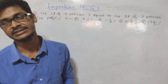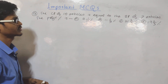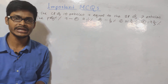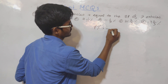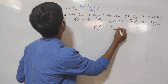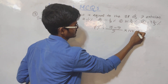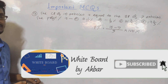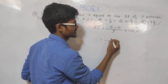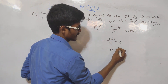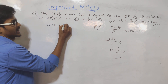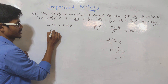The cost price of 9 articles equals the selling price of 8 articles. Find the profit percent. Using the formula profit percent equals (x minus y) by y into 100, where x is CP articles and y is SP articles. So profit percent equals (9 minus 8) by 8 into 100, which equals 1 by 8 into 100, giving 100 by 9 percent, approximately 11.1 percent.